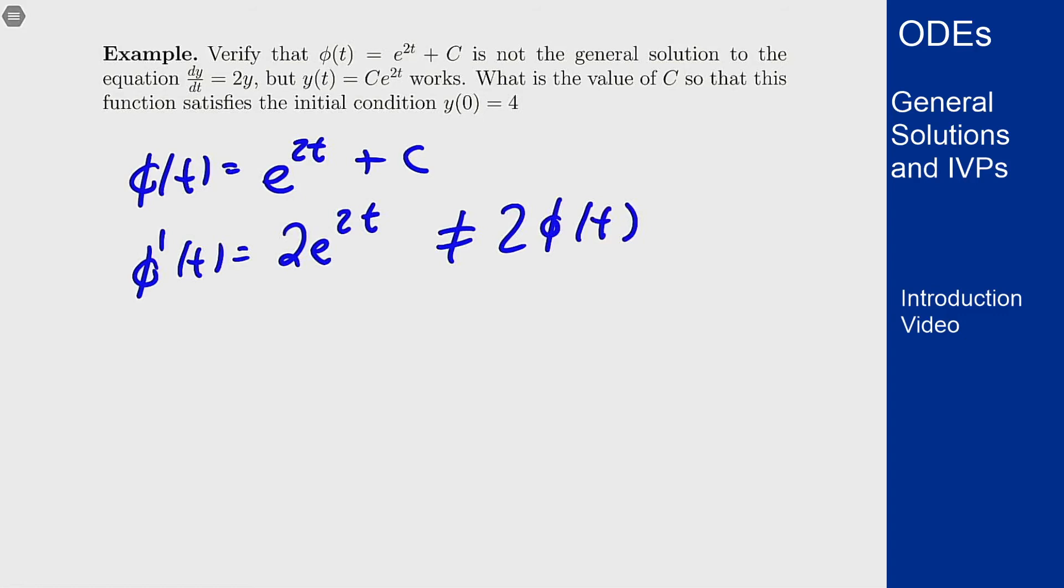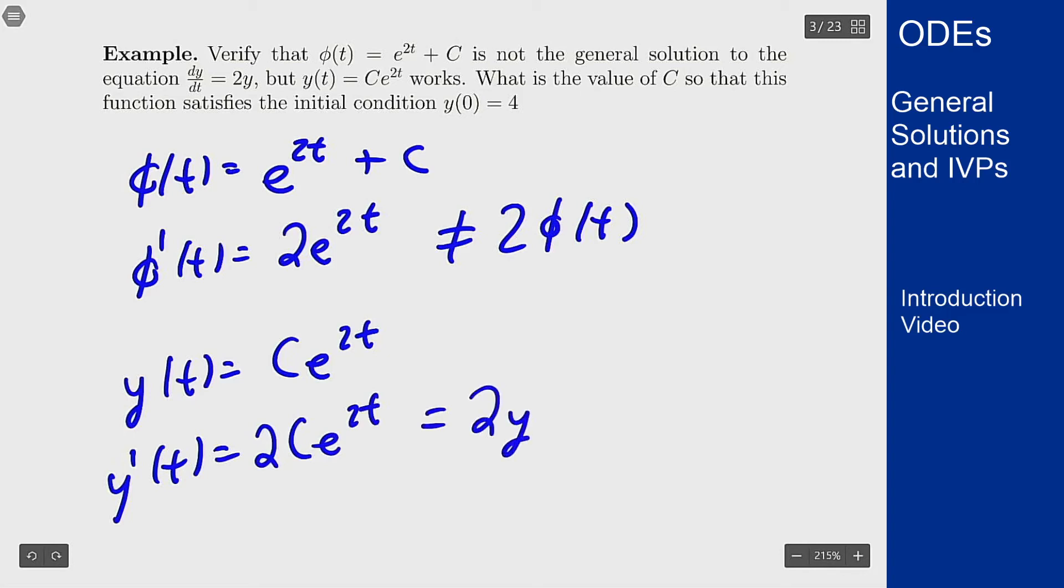However if I look at y, my y function is ce^(2t) and y prime here will be 2ce^(2t) which is in fact 2y. So this one does not solve the problem but this one does.